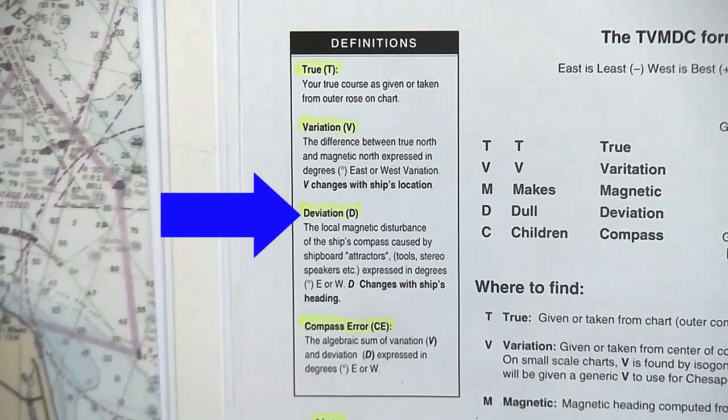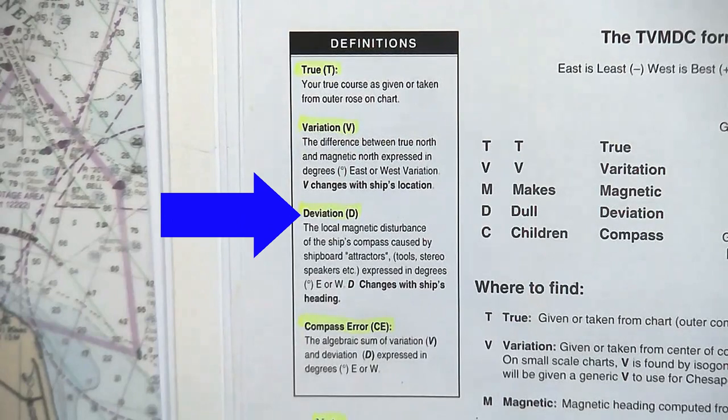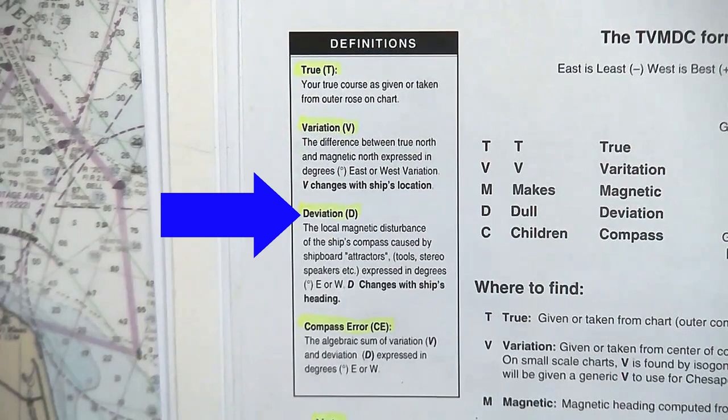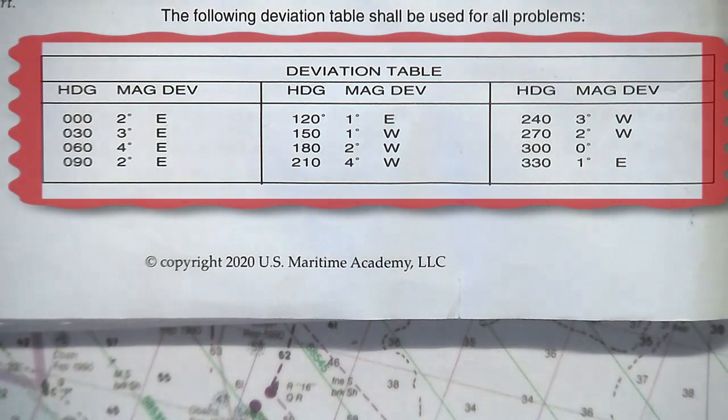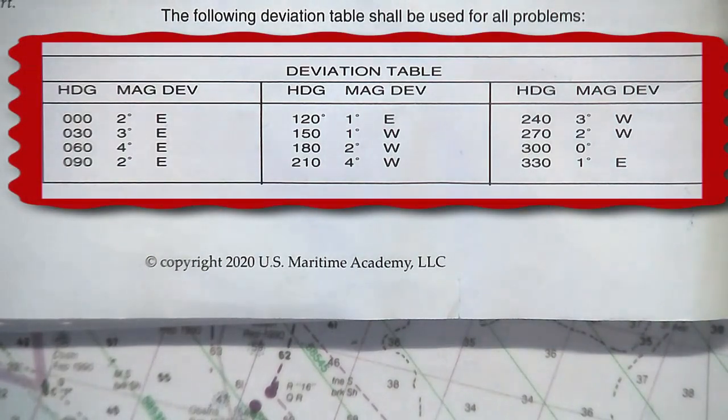Deviation is caused by the local magnetic disturbances aboard your ship. Things like your stereo, your bag of tools, your engine even, can cause unique deviations on every vessel on different headings. This will be explained further in class. But for the purposes of these classes, we will use the deviation tables shown at the bottom of each page of your yellow book.